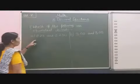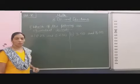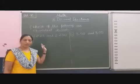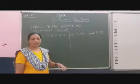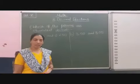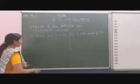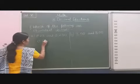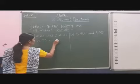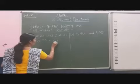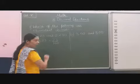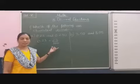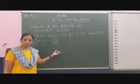We have 0.23 and 0.230. I will convert this decimal number into a fraction so you can understand easily. So 0.23 is equal to 23 over 100. We can write this. When we convert the decimal number into the fraction, earlier also we learned how to convert fractions into decimal numbers.